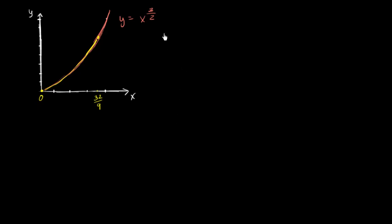So we know that the arc length is going to be equal to the definite integral from zero to 32 over nine of the square root, actually let me just write it in general terms first so that you can kind of see the formula and then how we apply it.